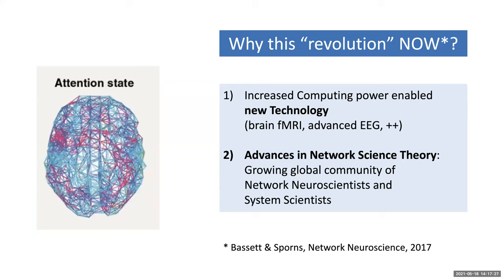Why is this revolution in brain science happening now? First of all, in the past 30 years there has been a tremendous increase in computing power, which has enabled new technology. At the same time, there have been advances in network science theory and a growing global community of neuroscientists and system scientists.